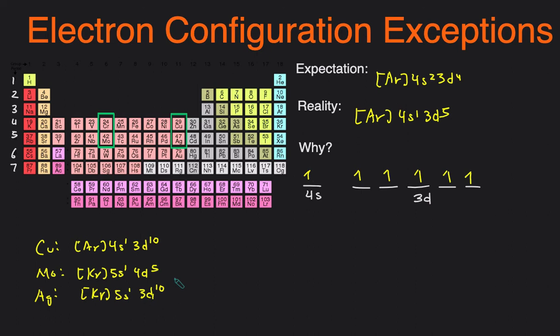And the reason for all of this is because half-filled subshells and fully filled subshells are more stable. So you can see that in all these cases the s's are half-filled, and then for copper and silver, the d's are fully filled, and then for molybdenum and chromium, they're half-filled.